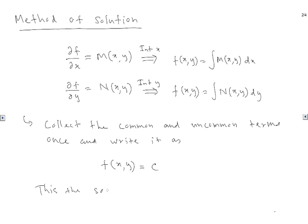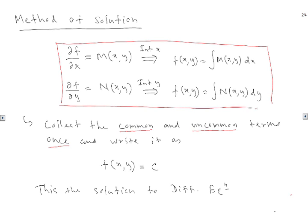That is the solution to the differential equation. The shortcut is that we don't have the differentiation step found in the traditional six-step process. We integrate M with respect to x, integrate N with respect to y, then collect common and uncommon terms written only once. Let's do two examples to see how this works.